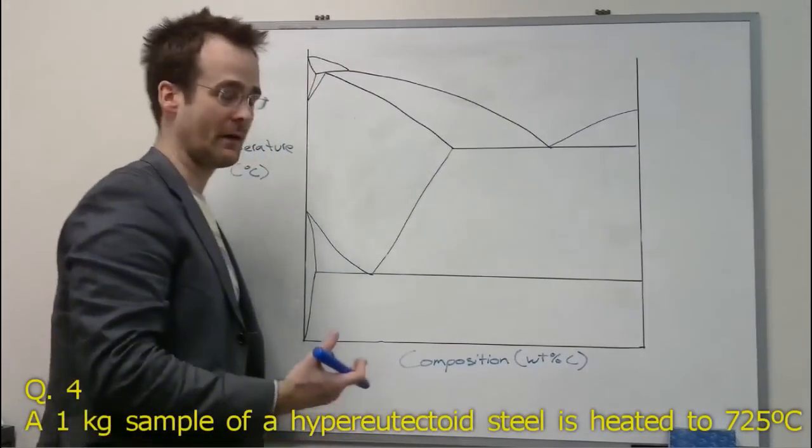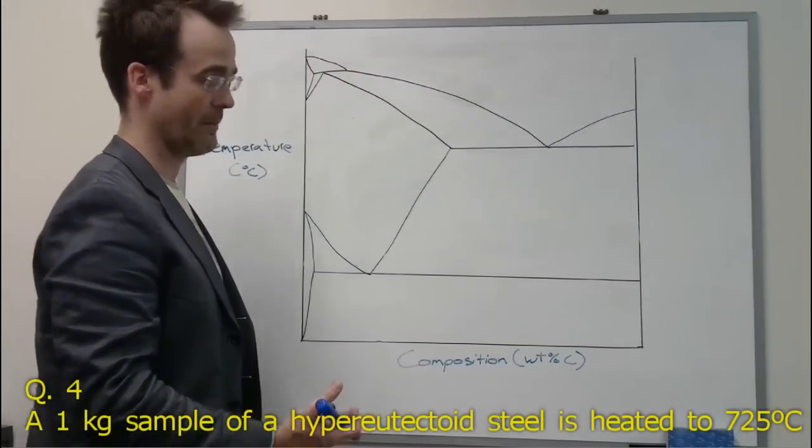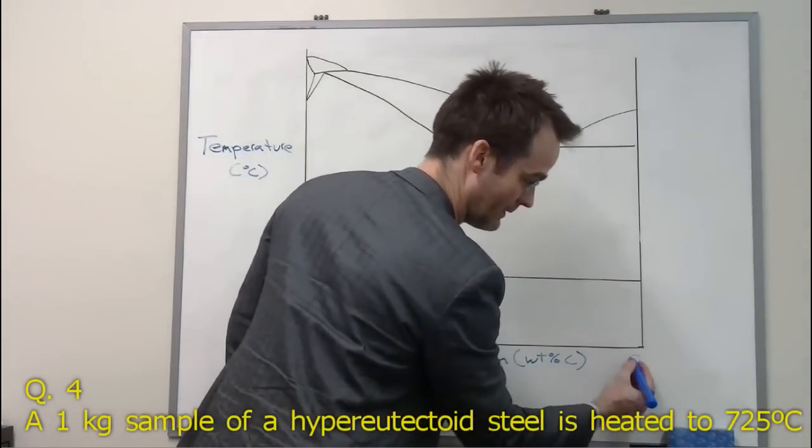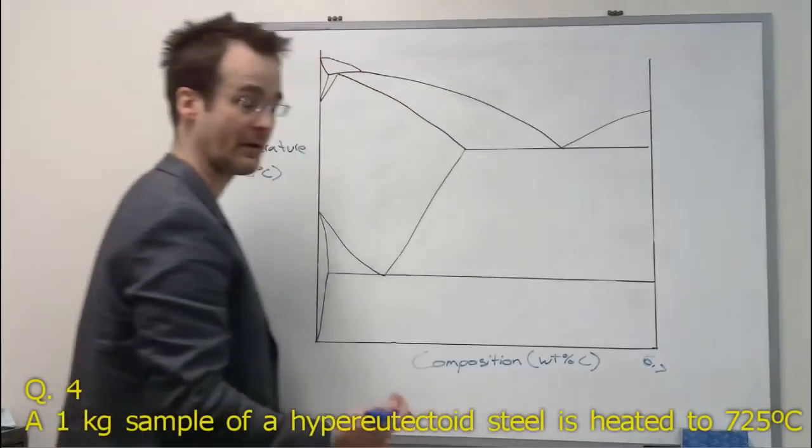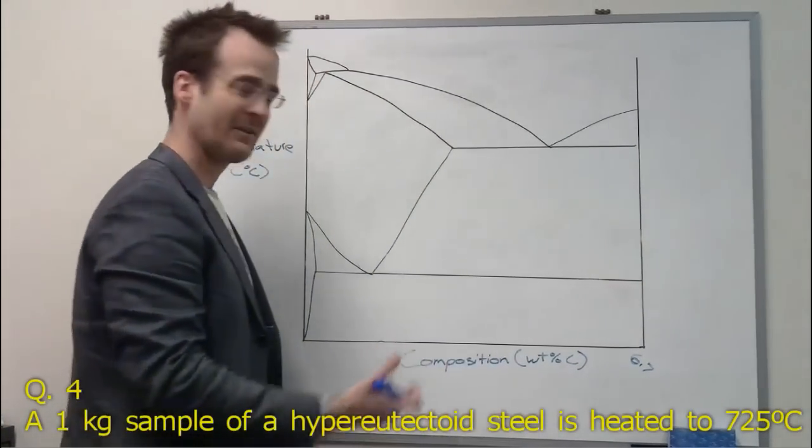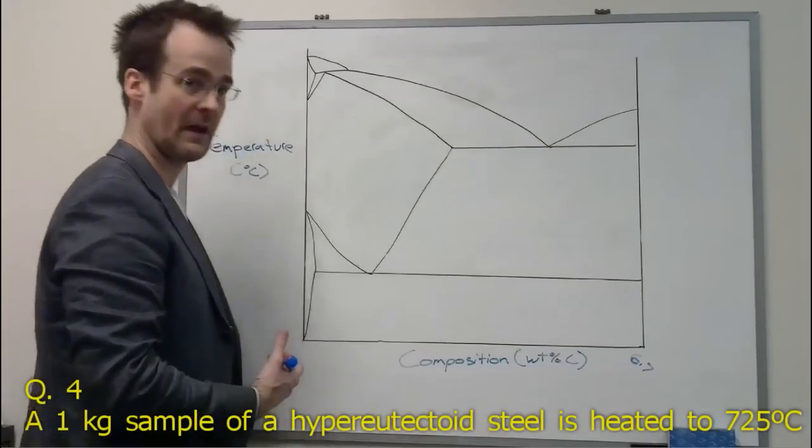Now in this case, with the iron carbide phase diagram, we actually stop at a composition of 6.7 weight percent carbon. We don't go all the way to 100% carbon because this is just the interesting portion of the phase diagram.